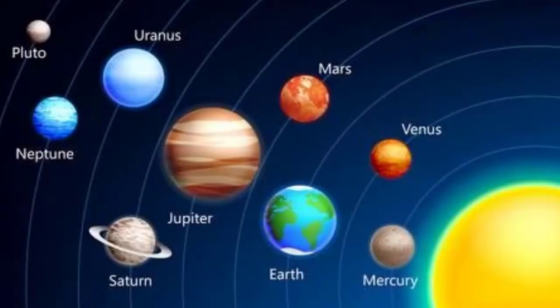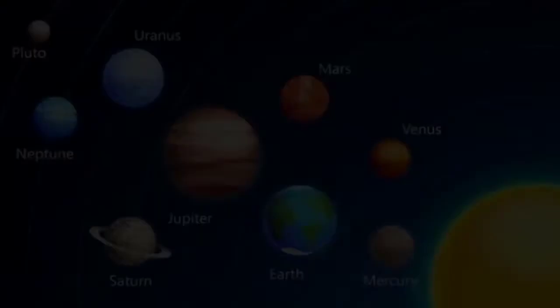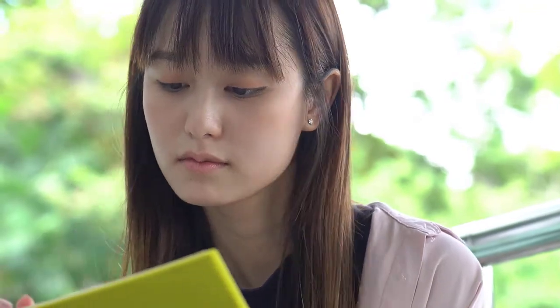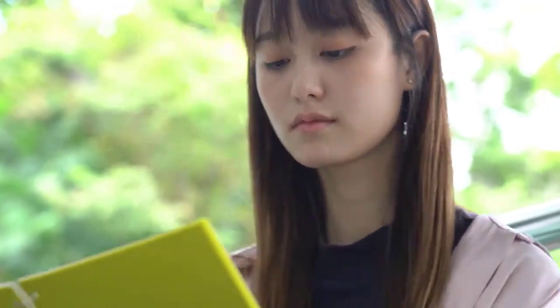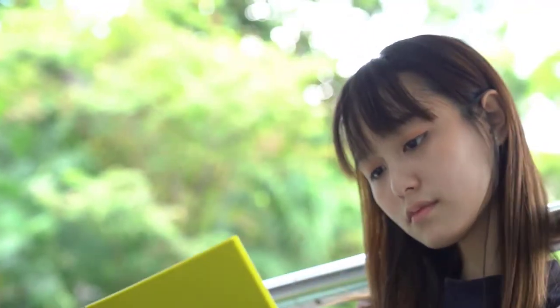There are eight planets, previously nine, in the solar system. Before moving on, what are planets? What are the features that define and categorize a body in space as a planet?